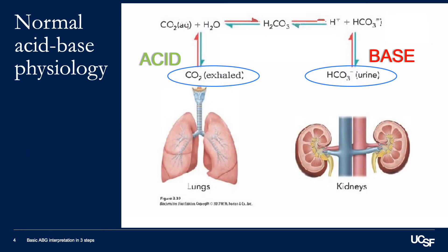Acid-base balance in the body is carefully maintained through the balance of two chemicals: carbon dioxide, the main acid in the body, which is mostly handled by the lungs, and bicarbonate, the main base in the body, which is mostly handled by the kidneys.